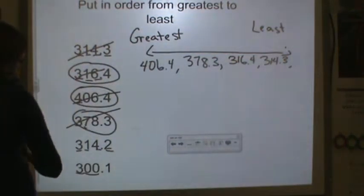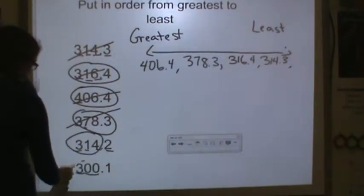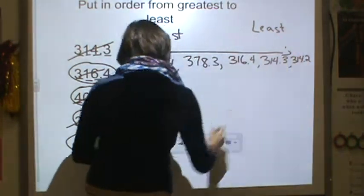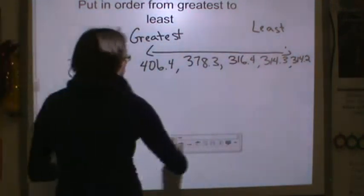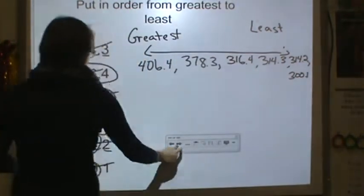Use that one. And then I know that 314 is greater than 300, so I'm going to do 314 and 2 tenths. And then my least number, I'm going to write it right here, is 300 and 1 tenths.